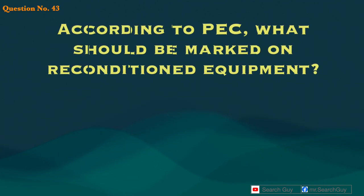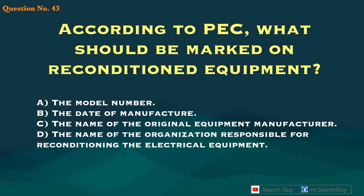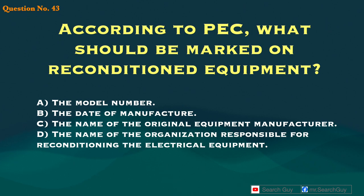Question 43. According to PEC, what should be marked on reconditioned equipment? A. The model number. B. The date of manufacture. C. The name of the original equipment manufacturer. D. The name of the organization responsible for reconditioning the electrical equipment.